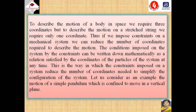To describe the motion of a body in space, we require three coordinates. But to describe the motion on a straight string, we require only one coordinate. Thus, if we impose constraints on a mechanical system, we can reduce the number of coordinates required to describe the motion. The coordinates imposed on the system by the constraints can be written mathematically as a relation satisfied by the coordinates of the particles of the system at any time. This is the way constraints reduce the number of coordinates needed to specify the configuration of the system.